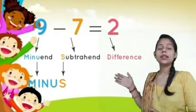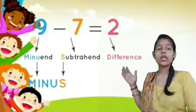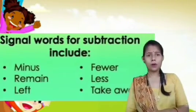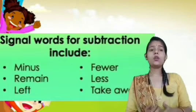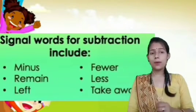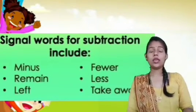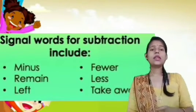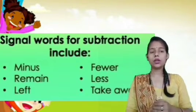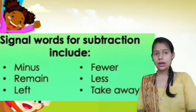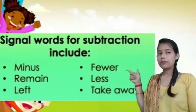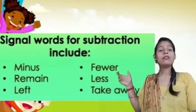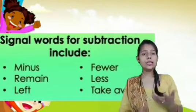Now, if we are solving a word problem, how can we identify that we are going to subtract and not perform another operation? There are mainly six keywords by which we can identify subtraction in a word problem. These are: minus, left, remain, fewer, less, and take away. Using these keywords, we can easily find out that we are going to subtract.